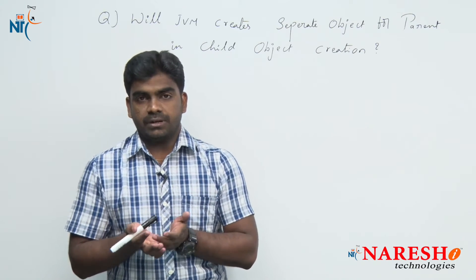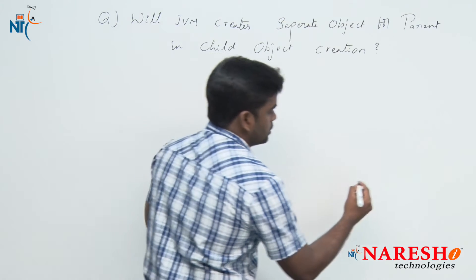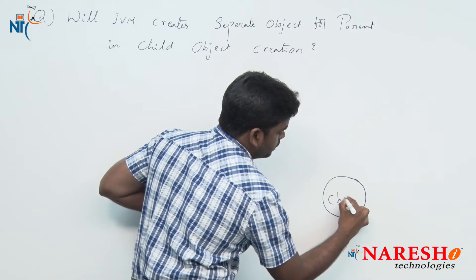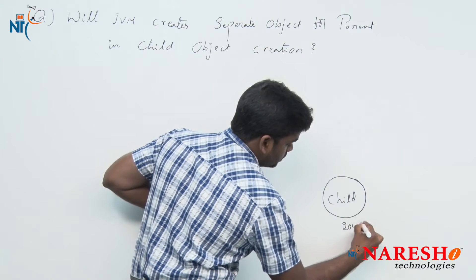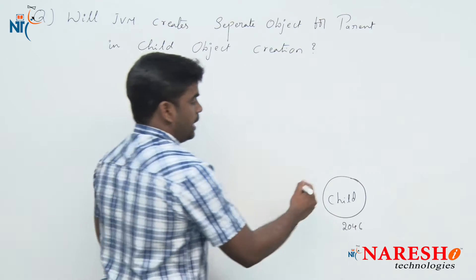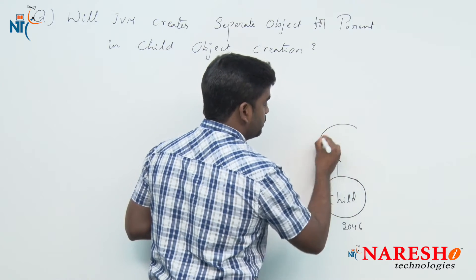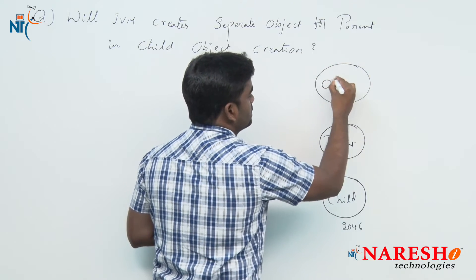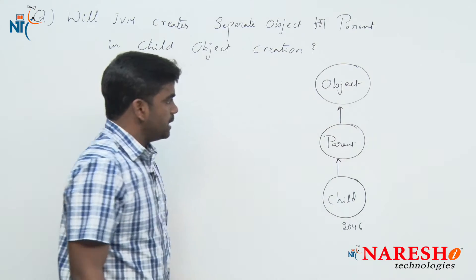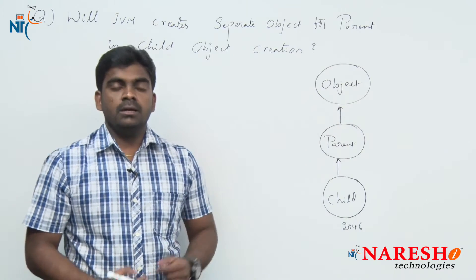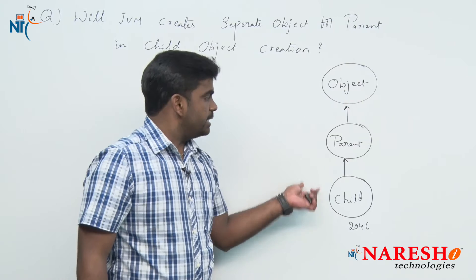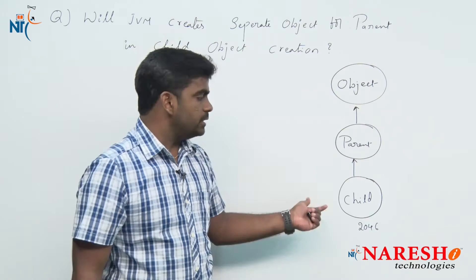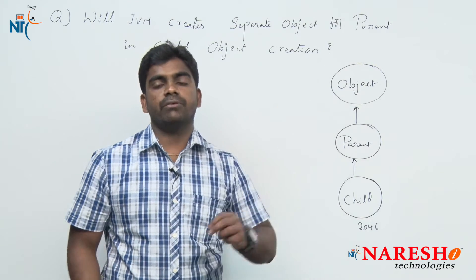Actually, for explanation sake we are discussing like this. Suppose if you create an object for the child class, this child object will be created at some location, and the parent object will also be shown as created. And in Java, every class is a subclass of the Object class, so an Object class object will also be shown. But in reality, the memory will not be allocated in three different locations for three different objects.